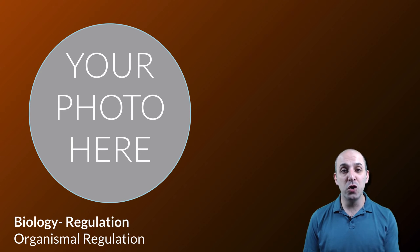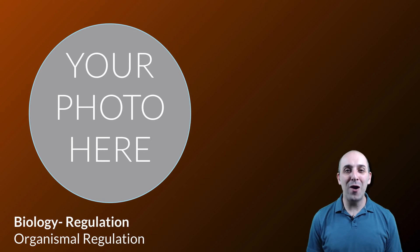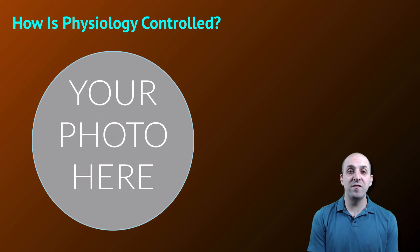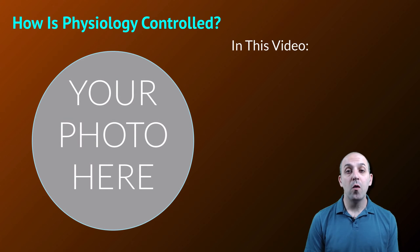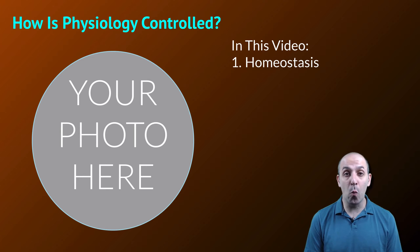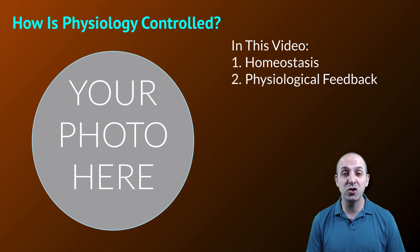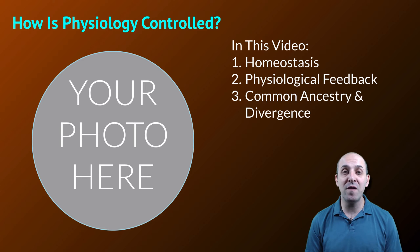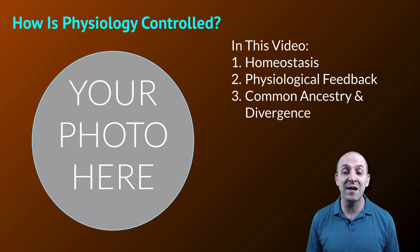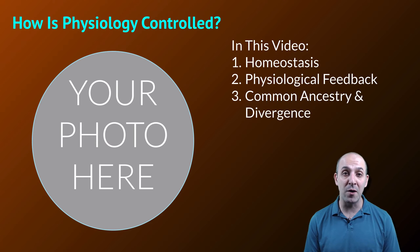And that's why your photo should be here, because you are a well-regulated organism. Congratulations. The question we're going to look at in this video is how is organismal physiology controlled? We're going to look at homeostasis and what that means for an organism, physiological feedback mechanisms, and examples of physiology that point to common ancestry and divergence for different environmental requirements.